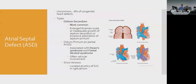Atrial septal defect (ASD) is less common at about 8%. There are three main types, but the most important is ostium secundum — where the foramen ovale or the hole in septum primum is too large. Ostium primum is considered a partial AVSD, associated with Down syndrome and fetal alcohol syndrome, and often has valve involvement. Sinus venosus is near the SVC. Just know that ostium secundum is the most common type.